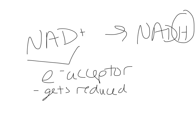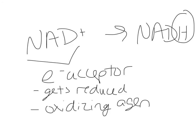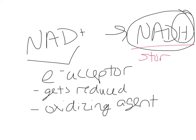We also get one NAD+ electron acceptor converted to NADH per PGAL. In redox terms, my NAD+ got reduced — its positive charge was reduced. So we get two NADH per glucose, as well as four ATP. In total per glucose molecule, I got four ATPs and two NADHs when converting glucose into two pyruvate molecules.